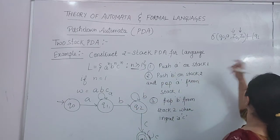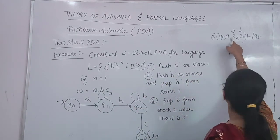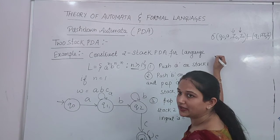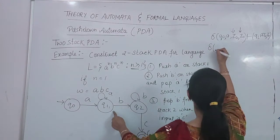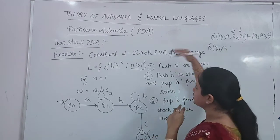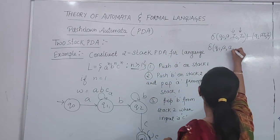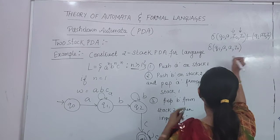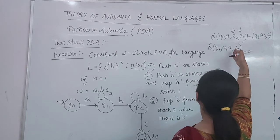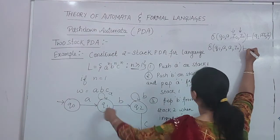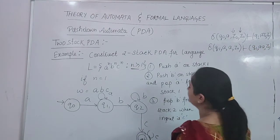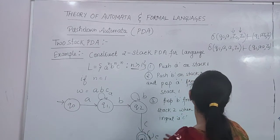We can write a transition to state Q1. At Q1, what do we need to do? We need to push, so the first symbol is for stack 1. We write A on Z0 for stack 1, and the second stack remains Z0. Now for the second transition: if we are at Q1 and A is again the symbol, because we have already pushed A onto stack 1, the top should be A, and the top of stack 2 should be Z0 since we are doing nothing with stack 2. So the loop at Q1 with A, A and Z0 — doing nothing with stack 2.